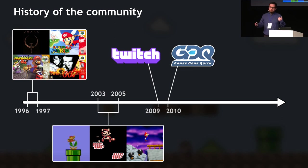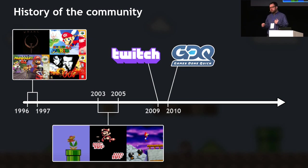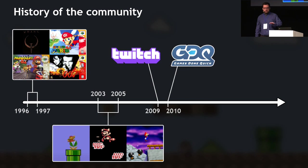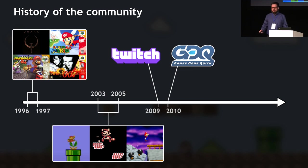A few years later, with the advent of Twitch, came the era of live streaming. Now the interest shifted from watching the final speedrun to watching the process — the attempts, the practice, seeing how people got better. Then in 2010, the very first charity event called Games Done Quick was held, and over the years it's been done twice a year, growing to massive numbers with thousands of attendees raising about six million US dollars per year to two charity foundations.